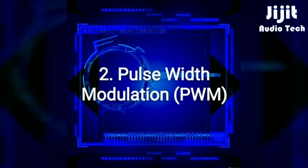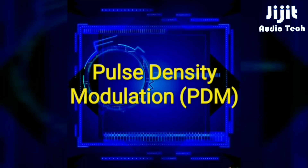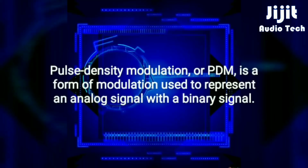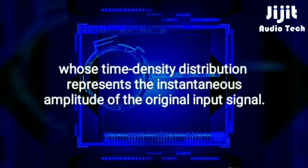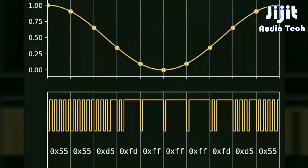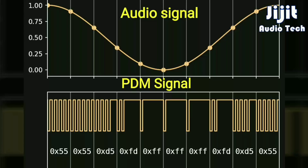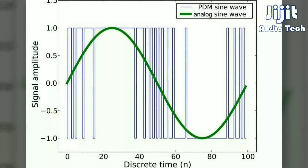The most popular modulation used is PWM — Pulse Width Modulation. You can also use PDM — Pulse Density Modulation. Either modulated signal can be used as the digital signal. The modulated signal is then generated, amplified by switching, and passed to the output where a high-frequency filter is used to reproduce the audio signal.